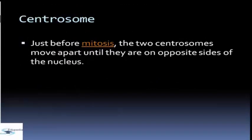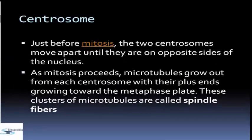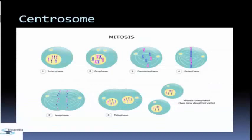When it comes to mitosis, the two centrosomes move apart until they are on opposite sides of the nucleus. As mitosis proceeds, microtubules grow out from each centrosome with their plus ends growing towards the metaphase plate. This cluster of microtubules is called spindle fibers, as you can see in the process of mitosis.